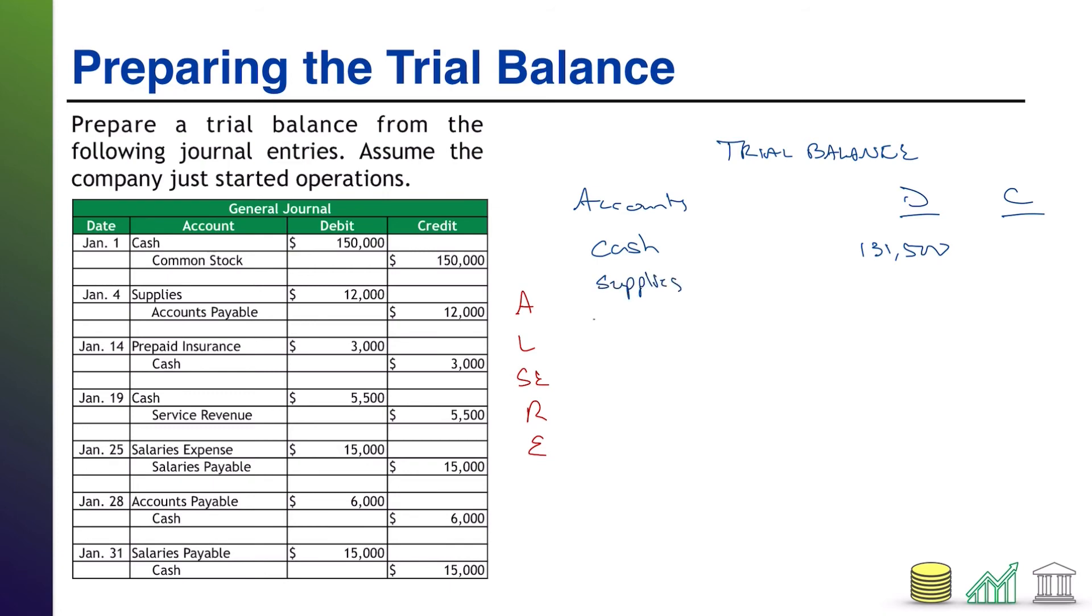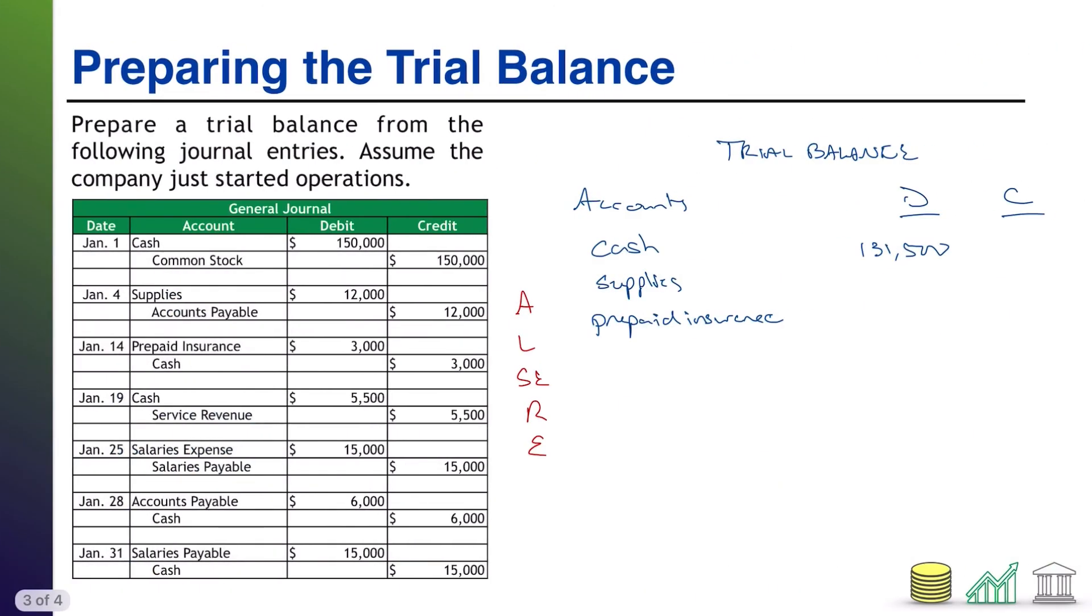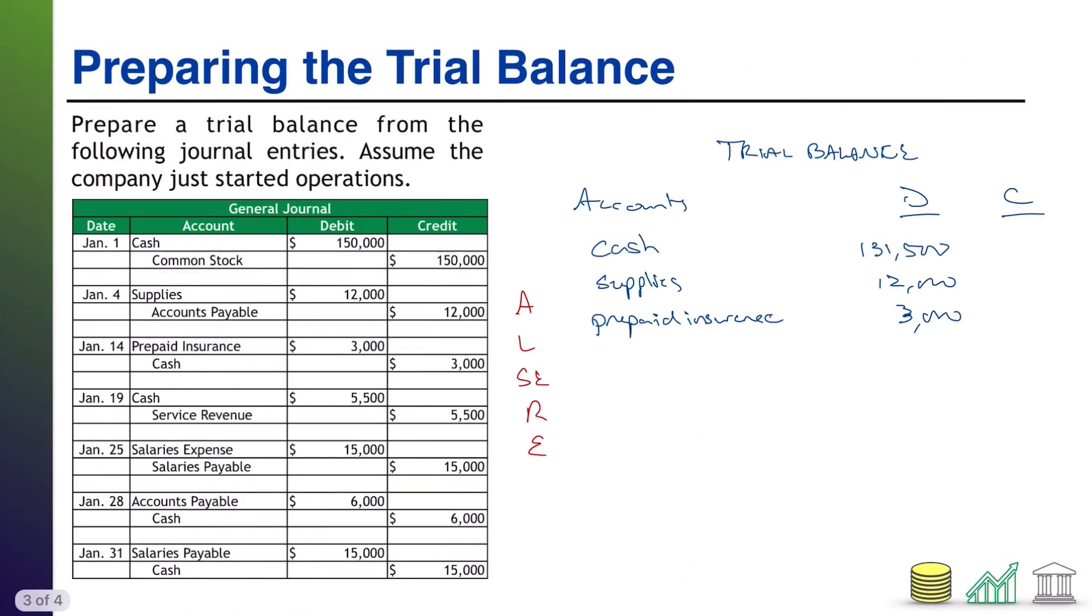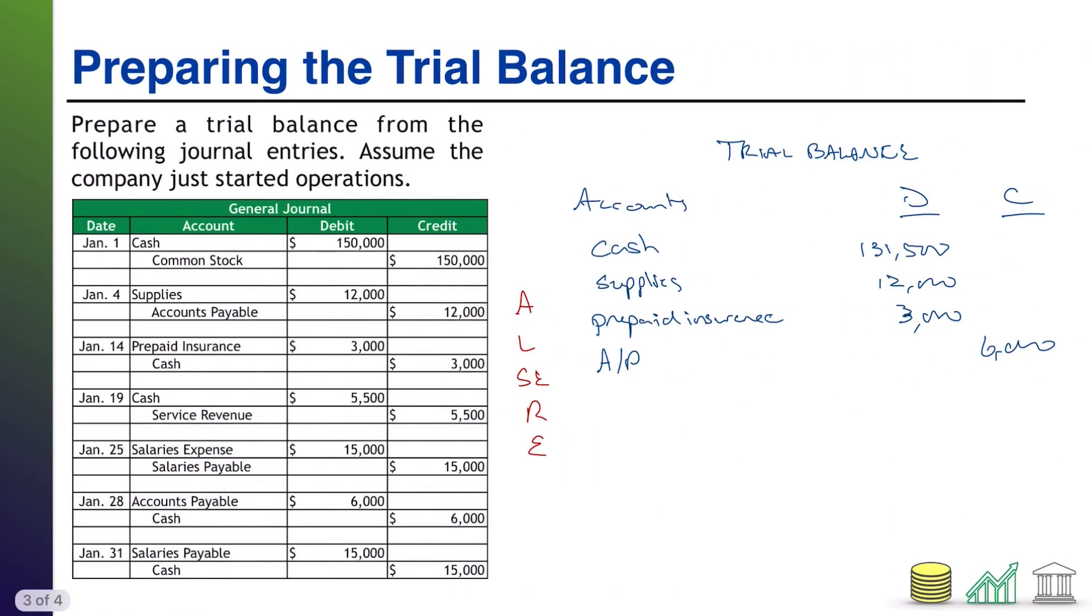So cash has $131,500 debit balance. I have, what did I say? I said I had supplies. I had prepaid insurance. Alright. If I go look back at my ending balances, my supply balance is $12,000. My prepaid insurance is $3,000. $12,000, $3,000. Again, these are debit balances because these are assets. Next up, I need my liabilities. In this problem, I have accounts payable. I have salaries payable, but it's got a zero balance, so we don't actually have to list it. So it looks like accounts payable might be the only liability to deal with. It's got a $6,000 credit balance in it. So AP, $6,000 on the credit side. Next up, I need equity. I have one equity account in this problem. That is my common stock with a balance of $150,000 on the credit side. Common stock, $150,000 on the credit side.